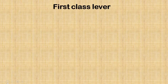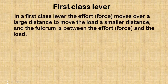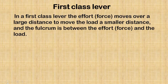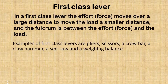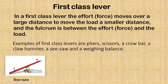There are three classes of lever. Number one is the first-class lever. In a first-class lever, the effort or the force moves over a large distance to move the load a smaller distance, and the fulcrum is between the effort or force and the load. Examples of first-class levers are pliers, seesaw, a crowbar, a claw hammer, and a weighing balance.